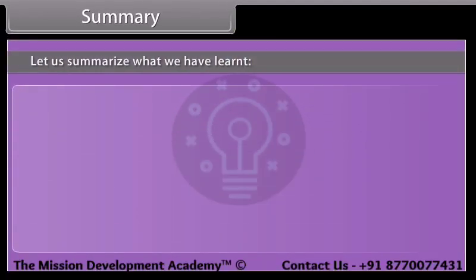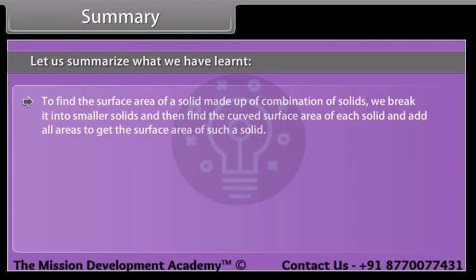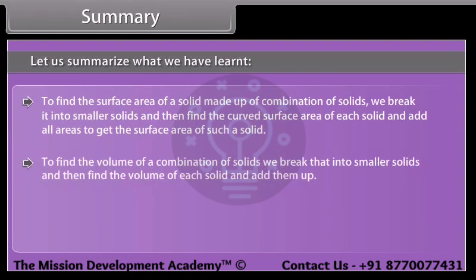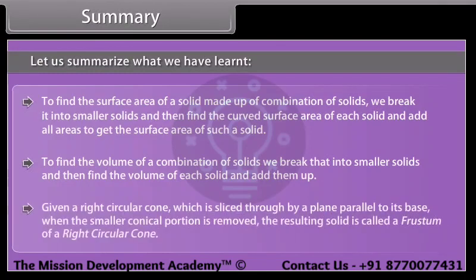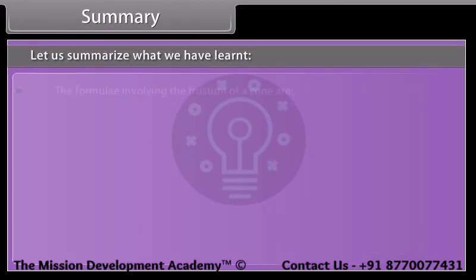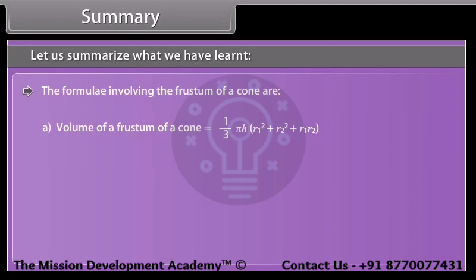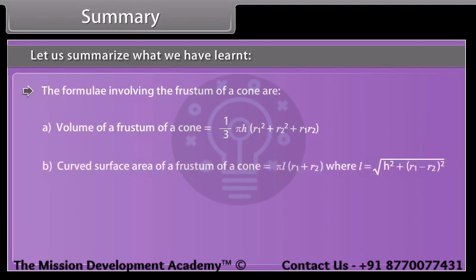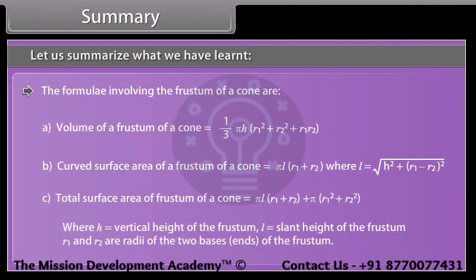Let us summarize what we have learned. To find the surface area of a solid made up of a combination of solids, we break it into smaller solids, find the curved surface area of each, and add all areas. Given a right circular cone sliced through by a plane parallel to its base, when the smaller conical portion is removed, the resulting solid is called the frustum of a right circular cone. The key variables are: H = vertical height, L = slant height, R₁ and R₂ = radii of the two bases of the frustum.